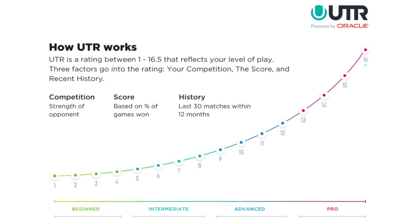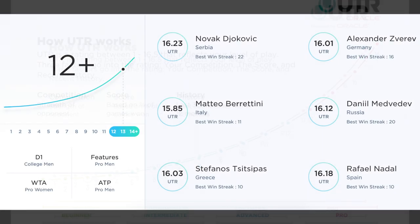The second factor is the score — specifically your percentage of games won. Did you win a match six-love, six-love, or was it maybe seven-six, six-seven, seven-six in the third? The third variable is your recent history: how have you performed during your last 30 matches within the last 12 months? UTR adds all those factors into its algorithm and then spits out a number for you.